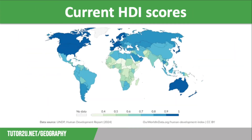On the screen, you can see the current HDI map from Our World in Data, which is a brilliant website for development data. If you visit the website, you can watch a timelapse of how HDI values have changed since 1990, and you can click on individual countries to see their HDI value. The UK has an HDI of 0.94 based on 2024 data, and it is ranked 15th in the world.